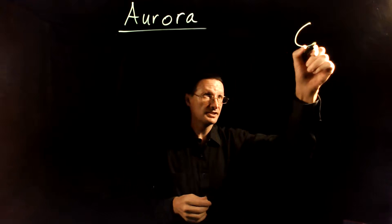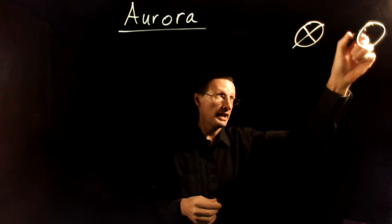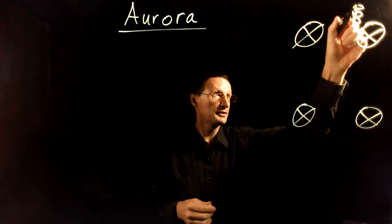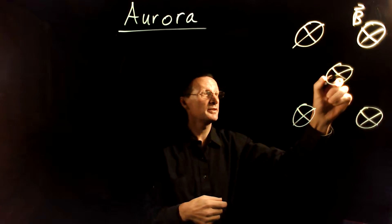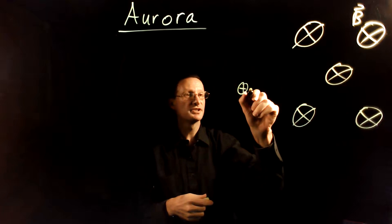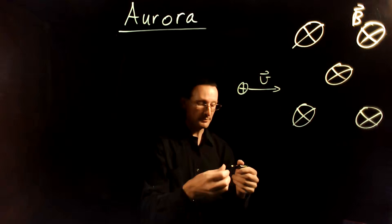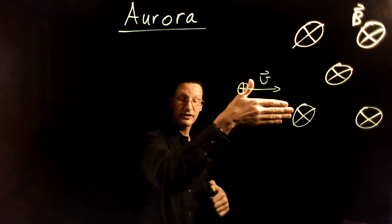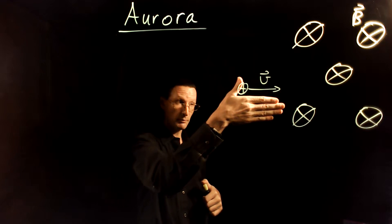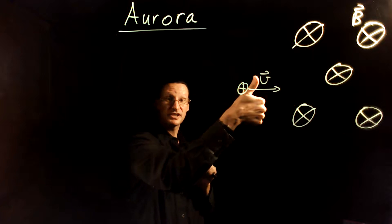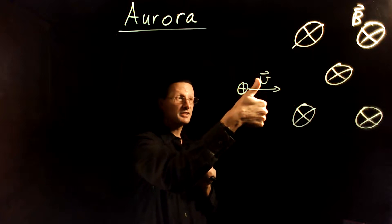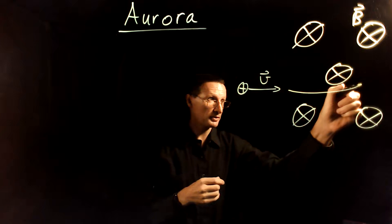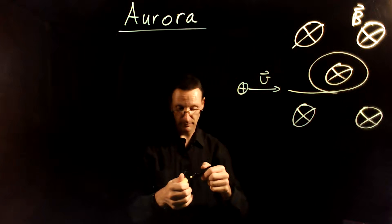Let's return to the situation where you normally have a velocity vector that is perpendicular to the magnetic field direction. Here's the magnetic field B, pointing into the screen. Starting with a positive charge with a velocity vector pointing this way, we use the Lorentz force law, QV cross B. Take your right hand, point your fingers in the direction of QV, push them into B, and the force points up — so it curves around in a circle.